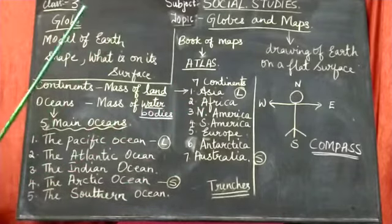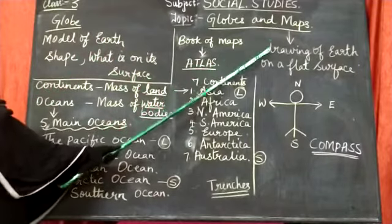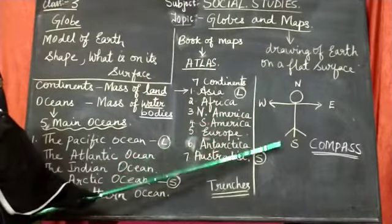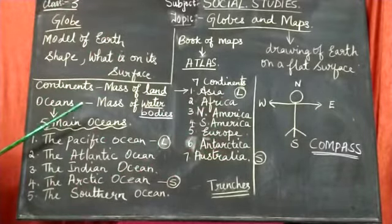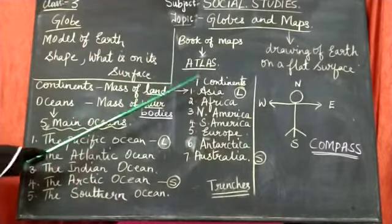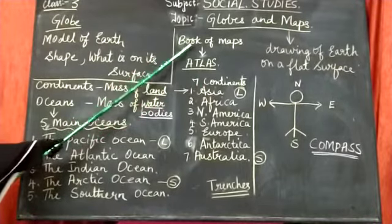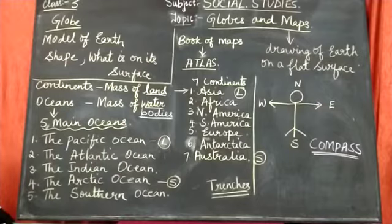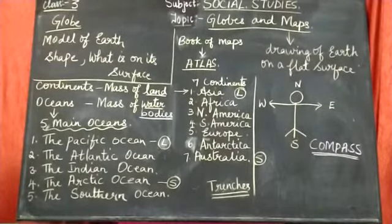So today we have learnt what is a globe? Model of earth. Then what is map? Drawings of earth on a flat surface. Then directions on the map? North, south, east, west. Then we came to know about continents and oceans. There are five oceans and seven continents. And Atlas is known as the book of maps. I would like you all to go through the lesson once and then write down the exercises in the textbook using your pencil. Jazakallah students.